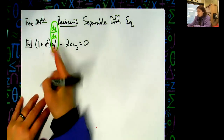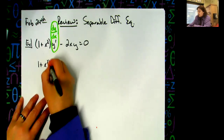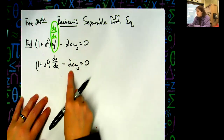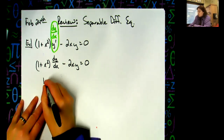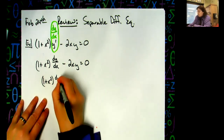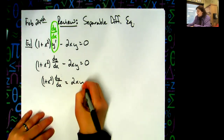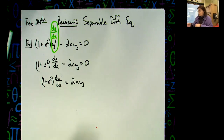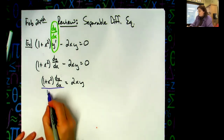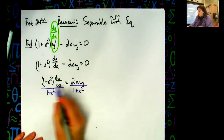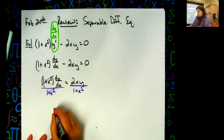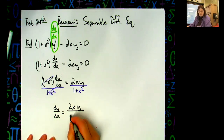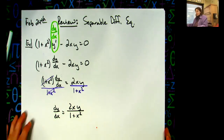I'll rewrite it with dy over dx: one plus x squared, times dy over dx, minus two x y equals zero. Let's add two x y to both sides: one plus x squared, dy over dx, equals two x y. Then divide both sides by one plus x squared, so dy over dx equals two x y over one plus x squared.